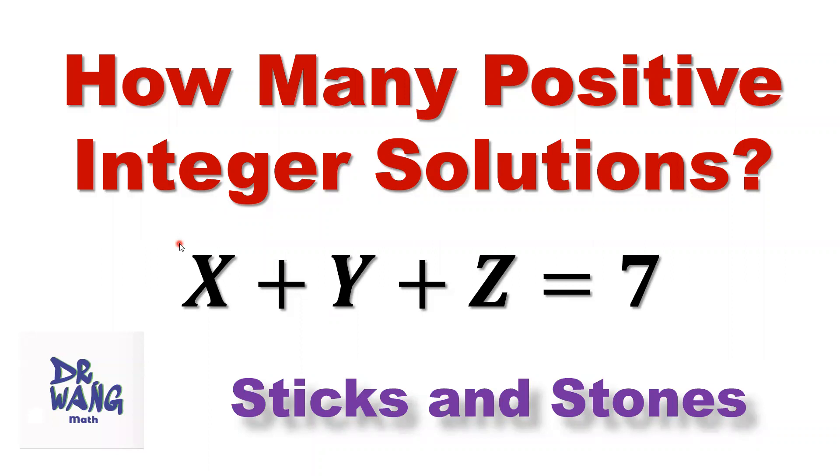Hello everyone, this is Dr. Wang. What is the question here? How many positive integer solutions for this equation x plus y plus z equals seven? Positive integer solutions means all x, y, z values must be positive integers, cannot be zero.